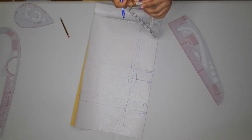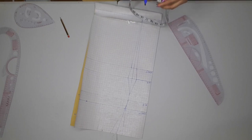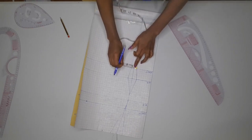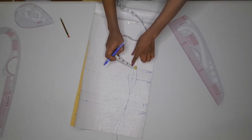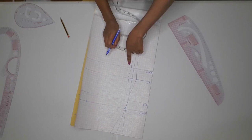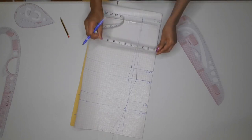Next is to insert waist measurement. My waist is 26 inches, divided by 4 gives me 6.5. Adding 1 inch dart gives 7.5, plus 1 inch to join the dart together gives 8.5, plus another 1 inch seam allowance gives me 9.5. I'm placing my 9.5 measurement on my waistline.